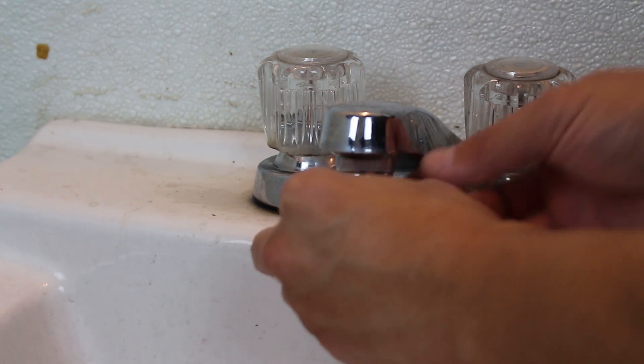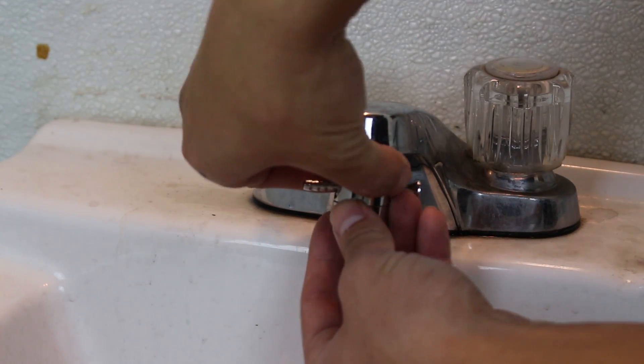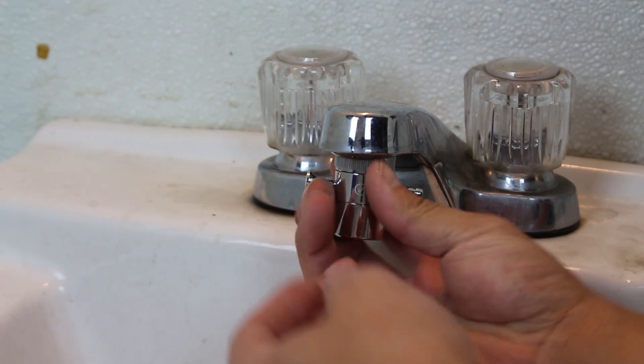First, I took out the aerator on my faucet and replaced it with a diverter. The diverter will allow you to send water straight to your filter.